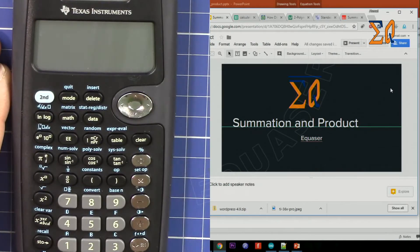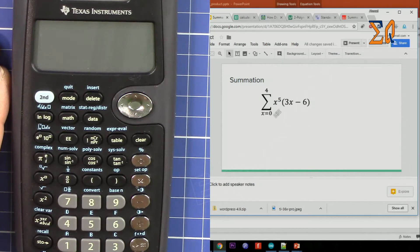So let's say you have an equation something like the summation of x to the power 5 times 3x minus 6, from 0 to 4.